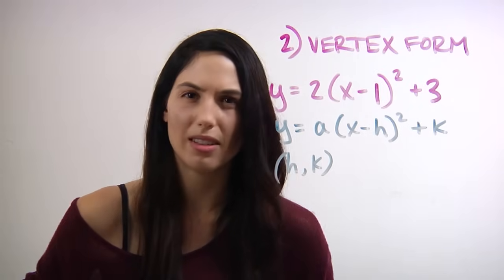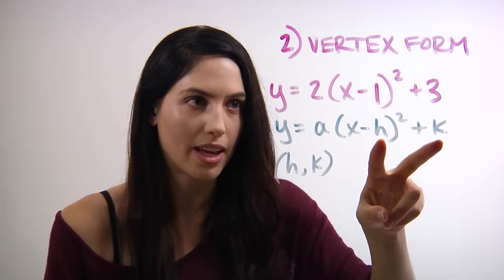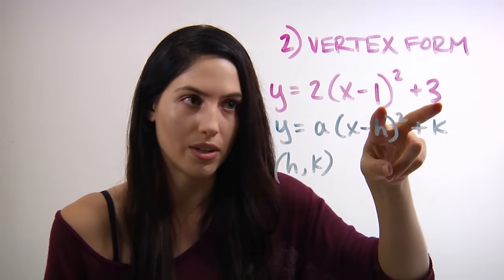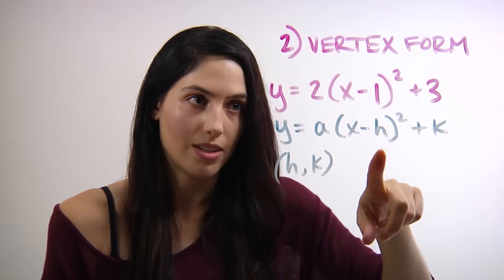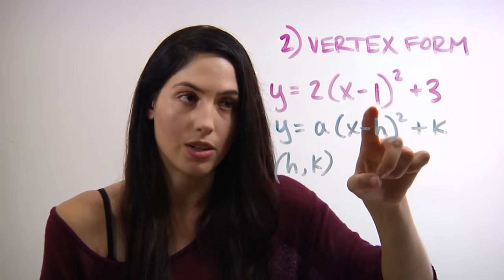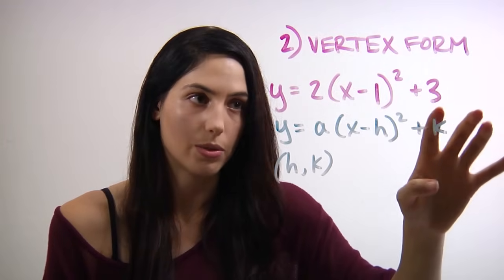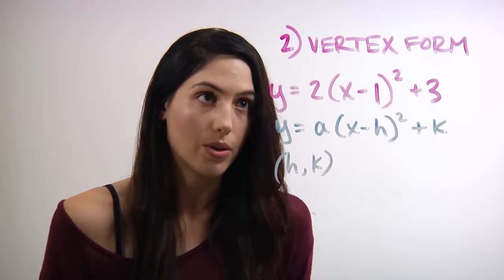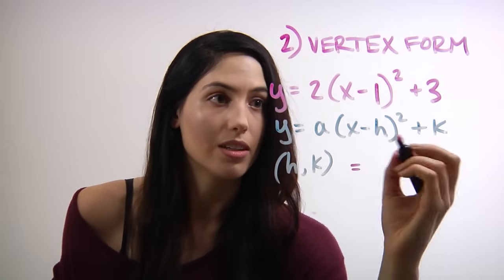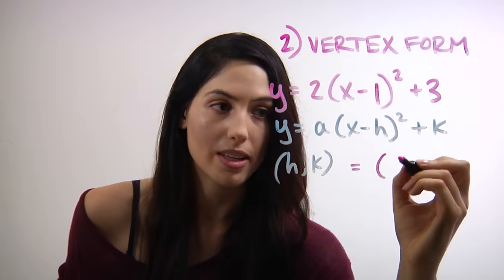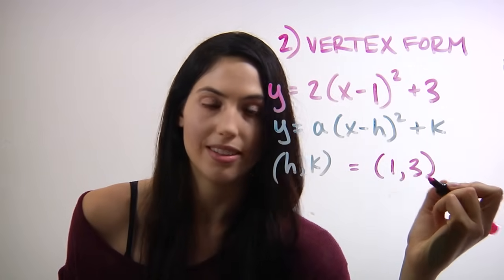So it really is just pattern matching. You want to match h and k to the numbers that you were given. If it was minus h in the general equation and minus 1 in your example, then your h equals 1 and your k equals 3. So the vertex for this problem would be (h, k), or (1, 3). And that's it.